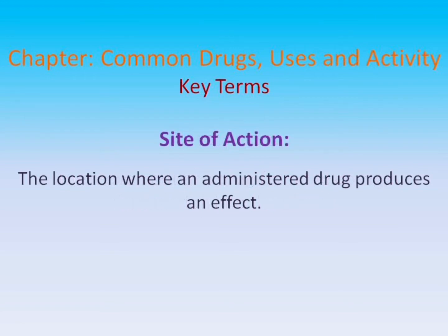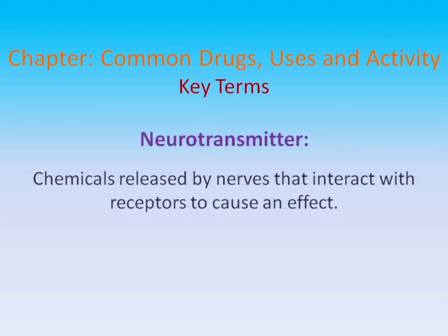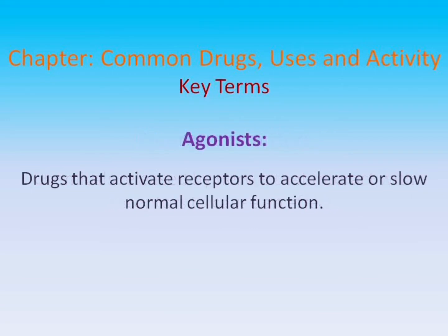Site of Action: The location where an administered drug produces an effect. Receptor: The cellular material located at the site of action that interacts with the drug. Neurotransmitter: Chemicals released by nerves that interact with receptors to cause an effect.